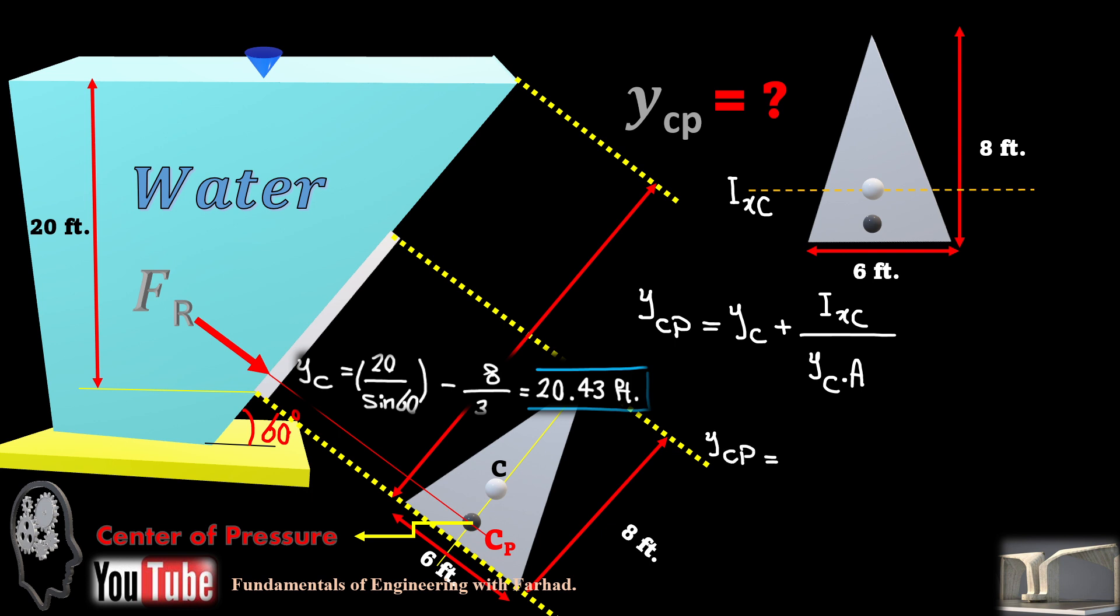Then y component of center of pressure is simply 20.43 plus ixc, which equals 1 over 36 times width times h cubed, height cubed. So, that's 1 over 36 times 6 times 8 cubed over yc, which is again from here, times the area, which is a half of 6 times 8. Then, if you calculate it, the numeric value of ycp is 20.60 feet.